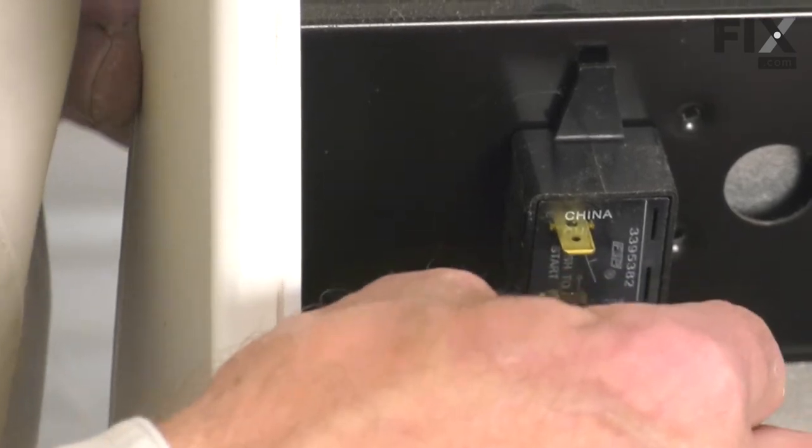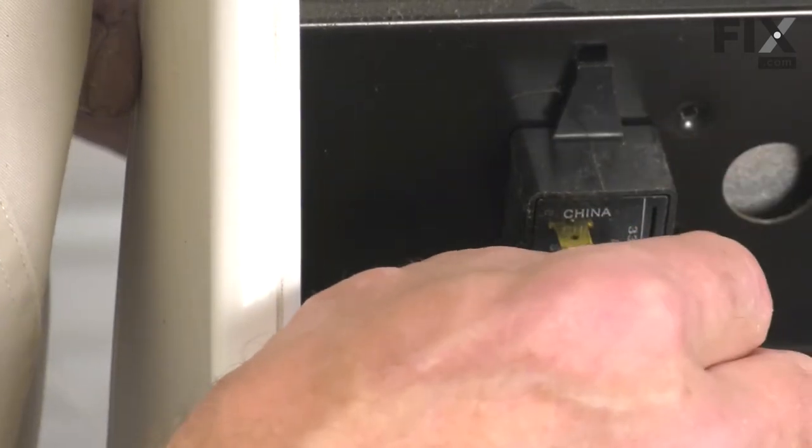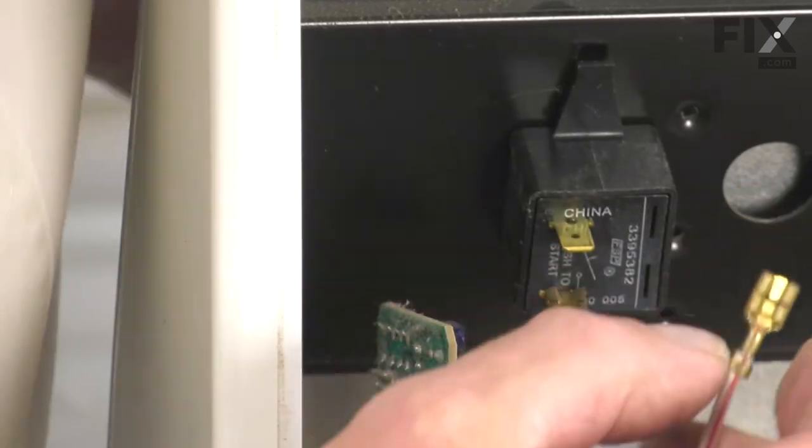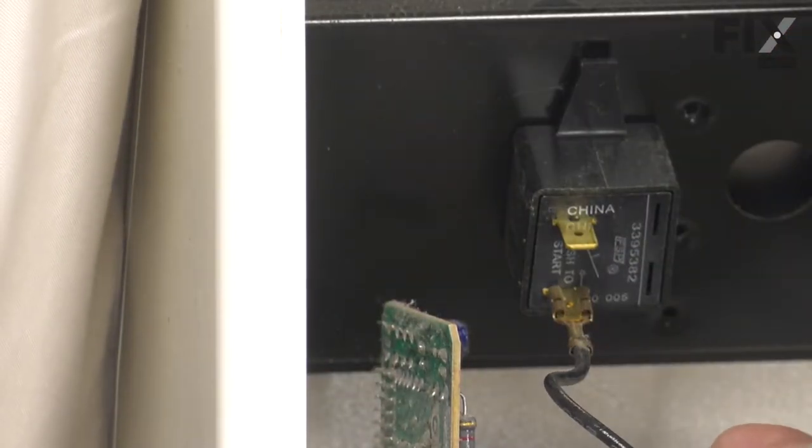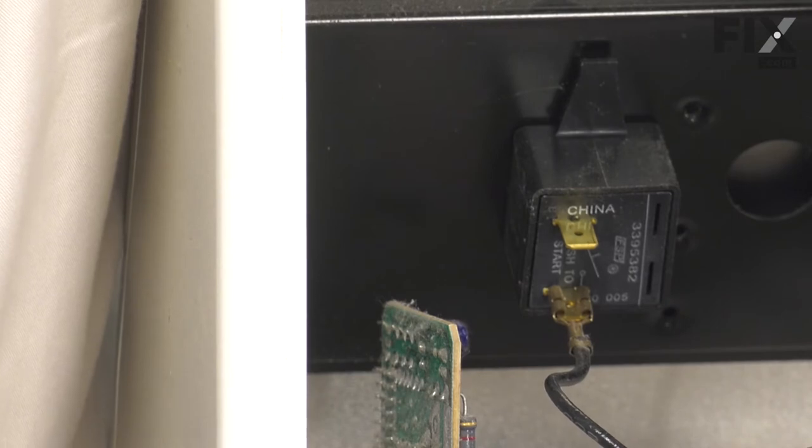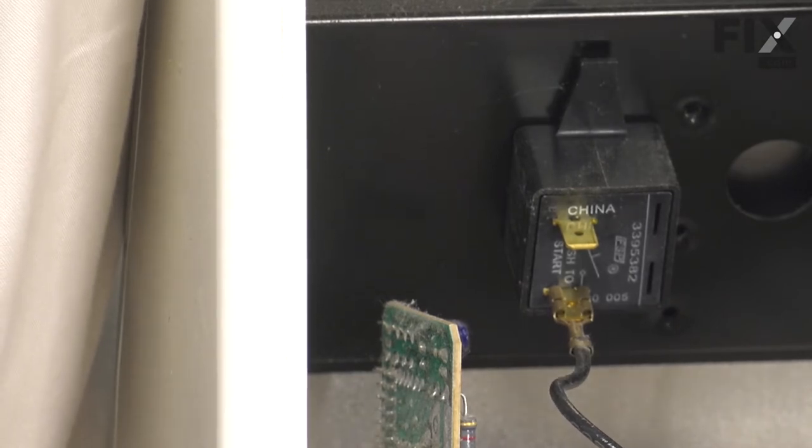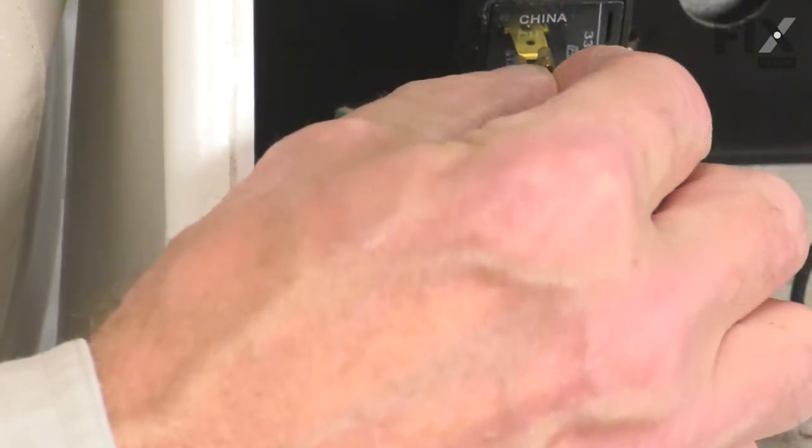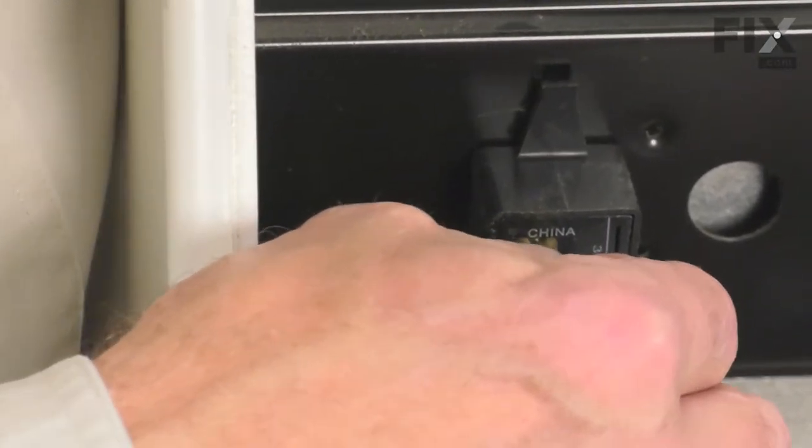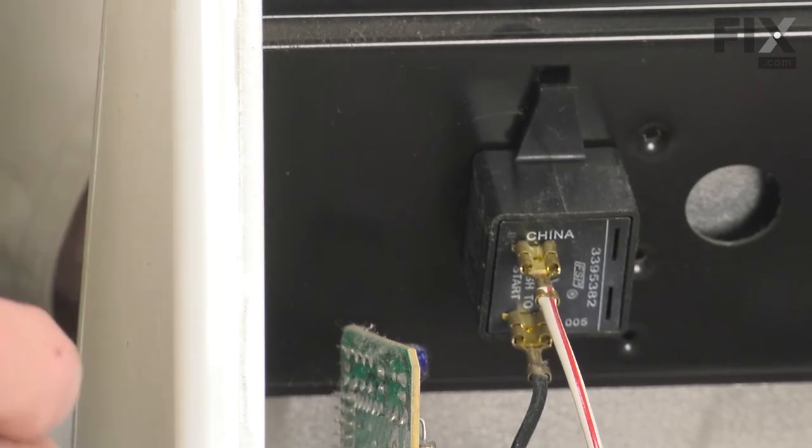We can then reattach the wires, and make sure that they fit on nice and snug. If they appear a little bit loose, just take the needle-nose pliers and just crimp them slightly, so that we get a nice tight fit.